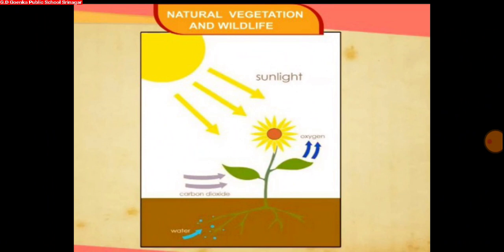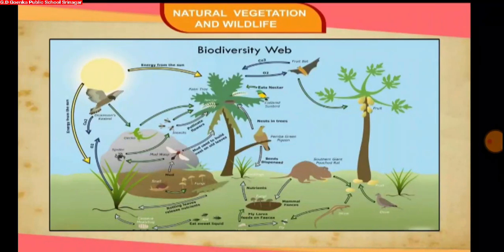Sunlight and rainfall are the two vital factors which control the type of vegetation. Our biosphere has a great variety of living things — from microscopic bacteria to huge plants and animals. Scientists have identified about 1.7 million organisms, and this great diversity of life is called biodiversity.